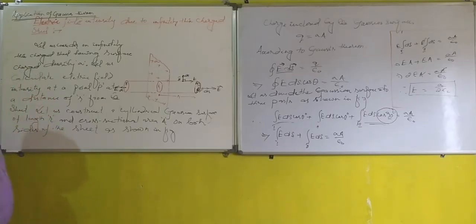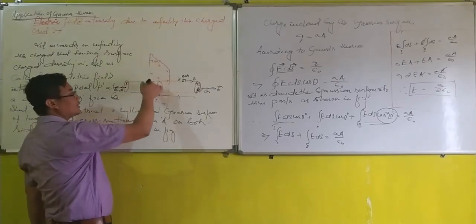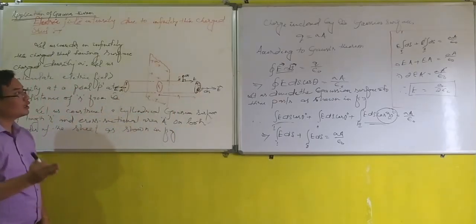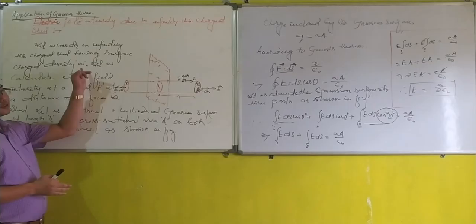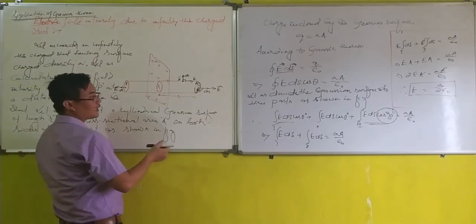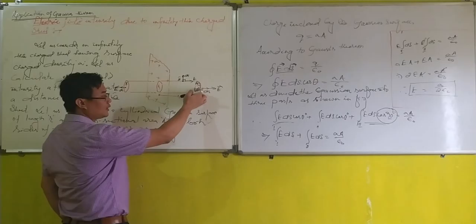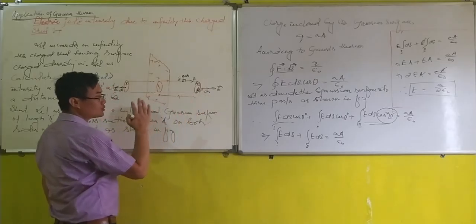First, let us consider an infinitely large plane charged sheet having surface charge density sigma. We have to find the electric field intensity at a point P at a distance A from the sheet.